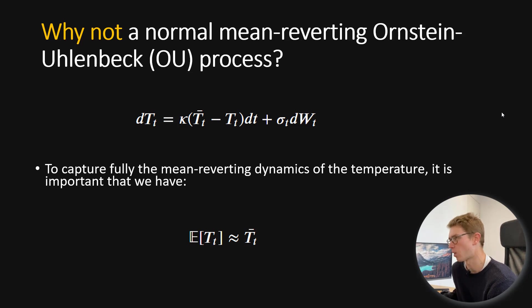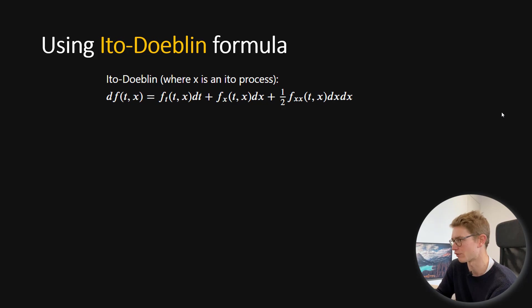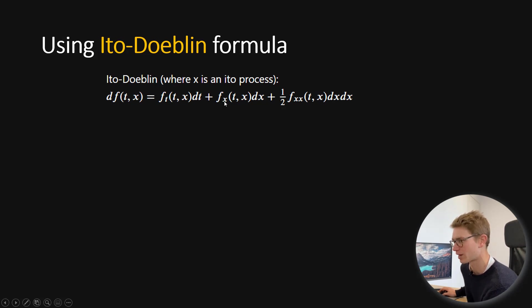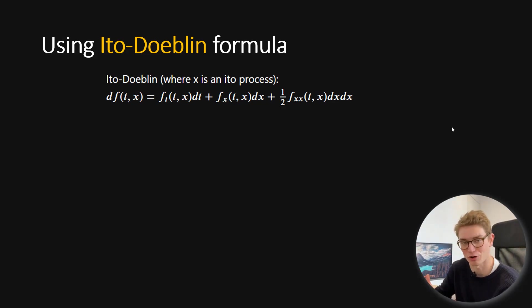We're going to explain why this is not the best choice for temperature. To prove this, we're going to use Itô calculus and more specifically the Itô-Doeblin formula. The Itô-Doeblin formula in differential form describes the dynamics of a function f, where x is an Itô process: the partial derivative of f with respect to t times dt, plus the partial derivative with respect to x times dx, plus one-half times the second partial derivative with respect to x times dx·dx.